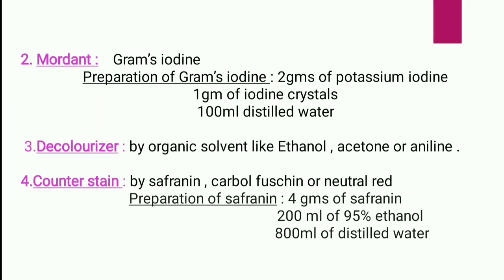100 ml of distilled water. Decolorizer: organic solvent like ethanol, acetone, or aniline. Counter stain is safranin or carbol fuchsin or neutral red — mostly safranin is used. Preparation: 4 grams of safranin, 200 ml of 95% ethanol, then 800 ml of distilled water.